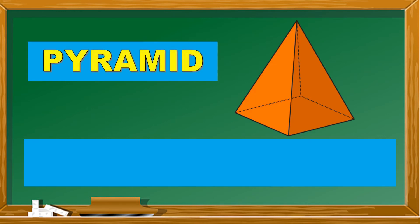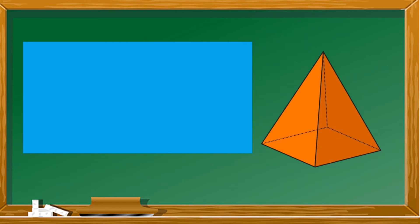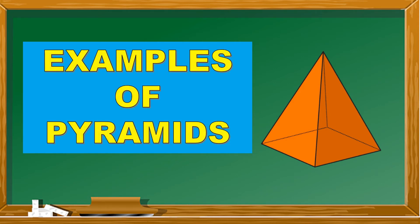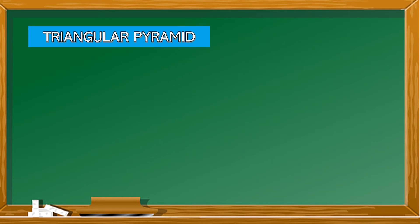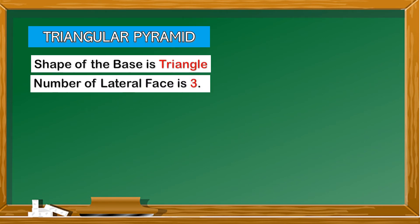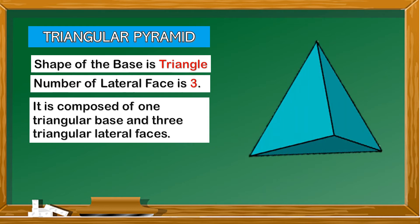Pyramid. A pyramid is a polyhedron whose base is a polygon and the lateral faces are triangles. Triangular pyramid: the shape of the base is a triangle and the number of lateral faces is 3. It is composed of one triangular base and three triangular faces. Here is an example of a triangular pyramid.